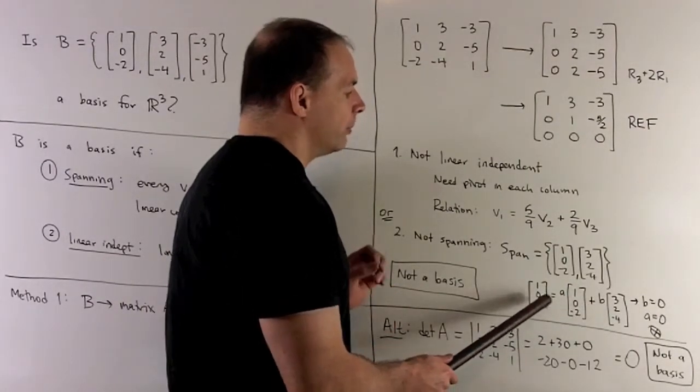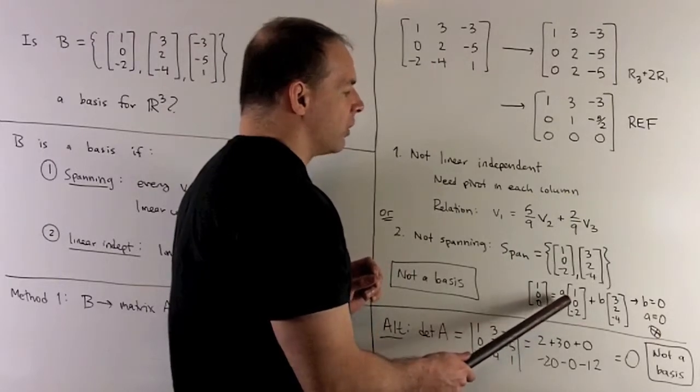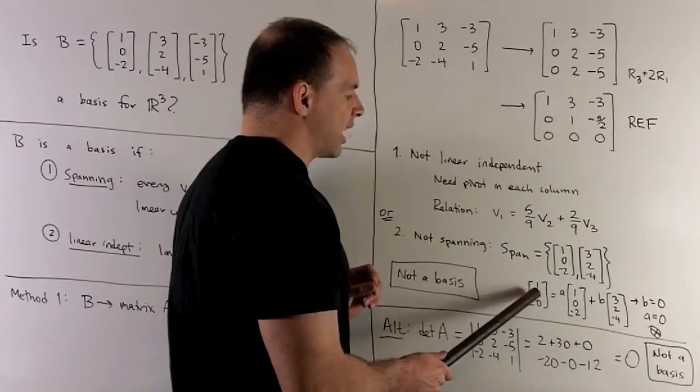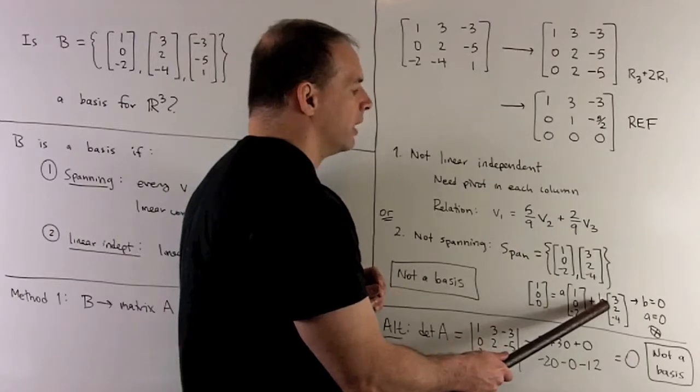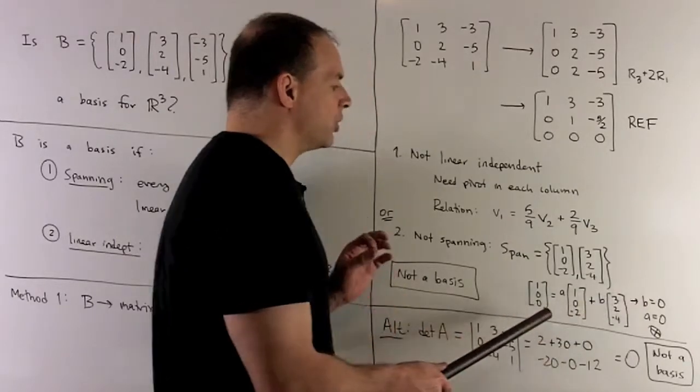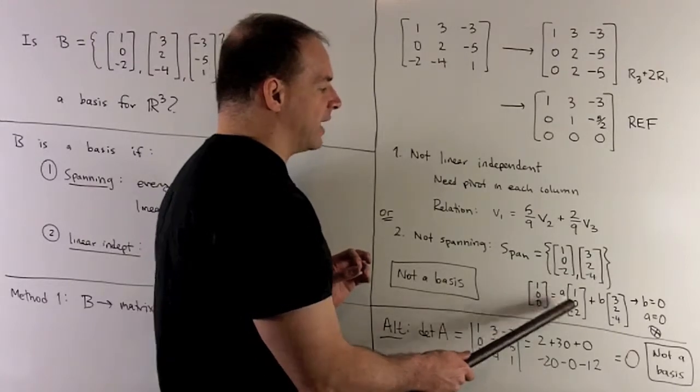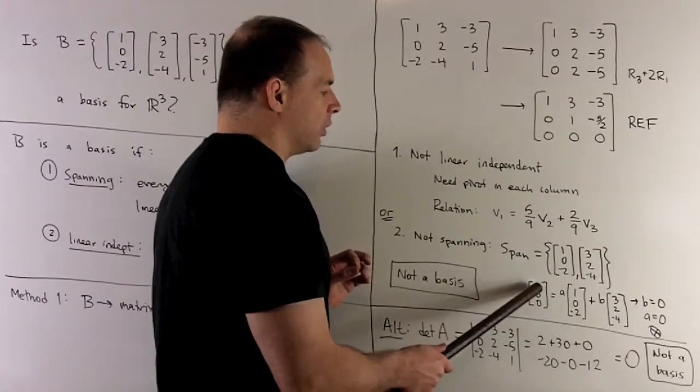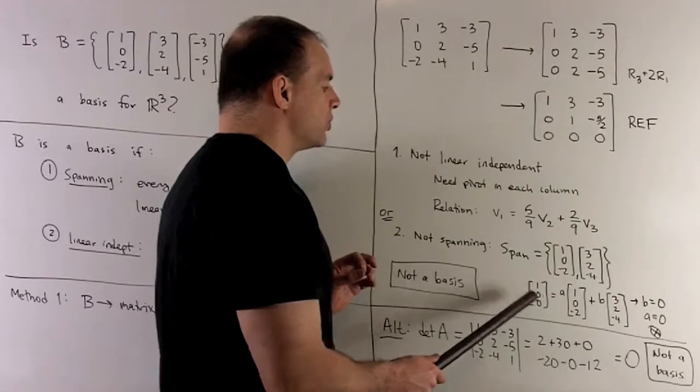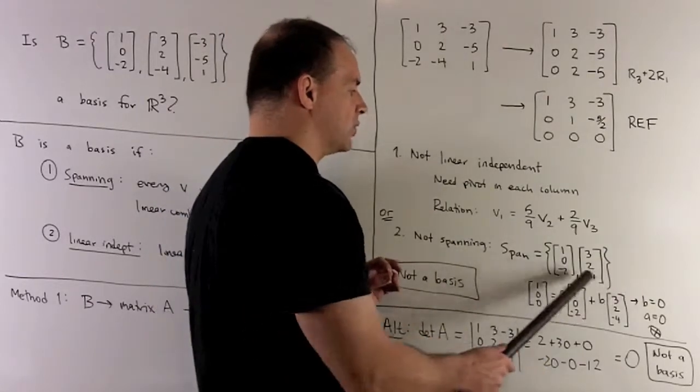To solve this, the only way to get 0 in the second term is if b equals 0. That causes problems, because then the only way to get 0 in the third entry is if a equals 0. But then there's no way to get 1 in the first entry. So (1, 0, 0) is not in the span of these two vectors.